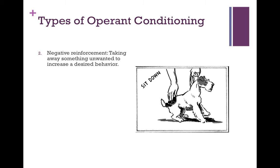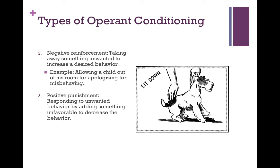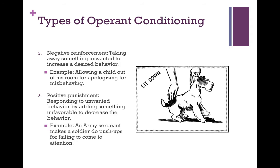Negative reinforcement is taking away something unwanted to increase a desired behavior. For example, allowing a child out of his room for apologizing for misbehaving. Positive punishment is responding to an unwanted behavior by adding something unfavorable to decrease the behavior. An example would be an army sergeant making a soldier do push-ups for failing to come to attention.